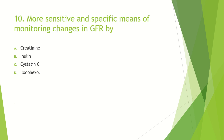More sensitive and specific means of monitoring changes in GFR: Option A: Creatinine. Option B: Inulin. Option C: Cystatin C. Option D: Iohexol. The answer is Inulin. Cystatin C may show changes in inflammatory conditions. The only problem with inulin is that it must be administered externally, but it does not affect its sensitivity or specificity, because it is neither reabsorbed nor secreted.